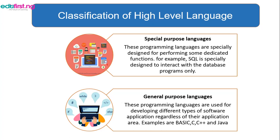General purpose languages are used for developing different types of software. They are not streamlined to a particular or special area, unlike special purpose languages. Examples include BASIC, C, C++, and Java. They are used to develop different types of software such as mobile apps and web apps.